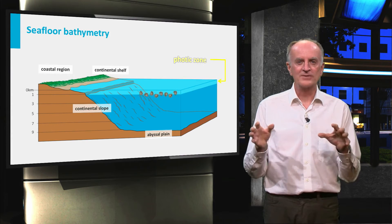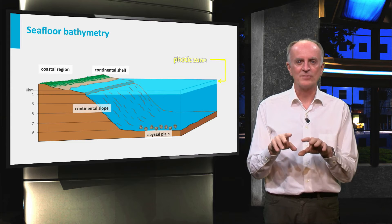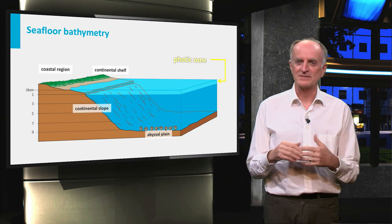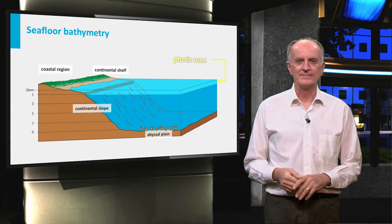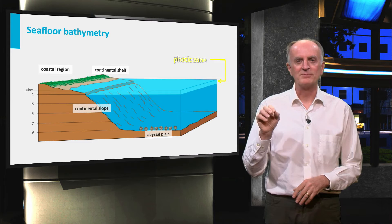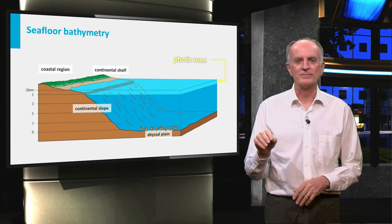Once they die, all these organisms will start sinking through the water column. The soft parts will be oxidized, consuming oxygen and producing a low oxygen layer. The hard parts will be preserved and further sink to the bottom of the ocean.